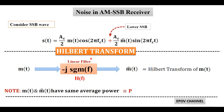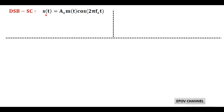In the SSB wave, the first term includes the message signal m(t) with cos(2π f_c t) and is called the in-phase component. The second term includes the Hilbert transform m̂(t) multiplied by sin(2π f_c t), known as the quadrature component. The plus sign between the two terms represents that the lower sideband is retained.